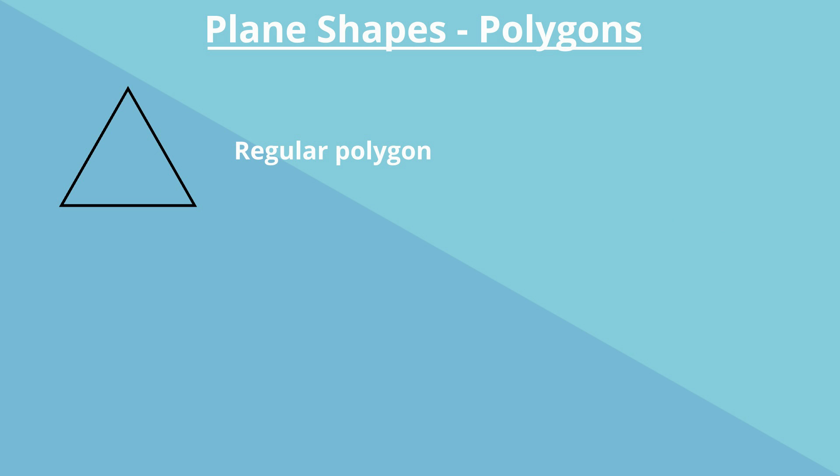Regular polygons are shapes that have all equal sides. All other polygons are irregular.